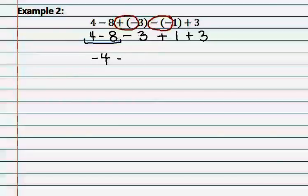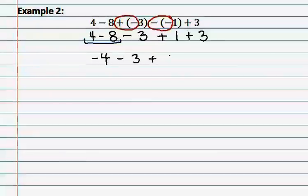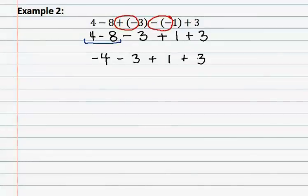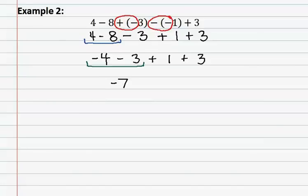We bring down the rest of the problem to continue solving. We look at the next two numbers and see that it is negative four and a negative three. These two numbers have the same sign, so we use the rule same sign add and keep. Adding three and four gives us seven, and keeping the symbol means the seven is negative.